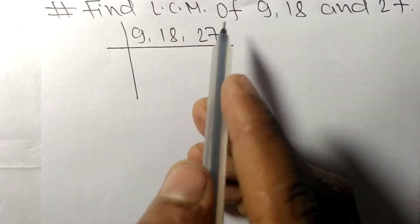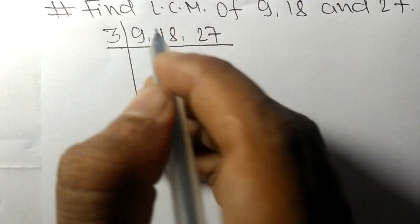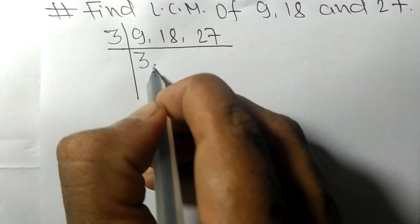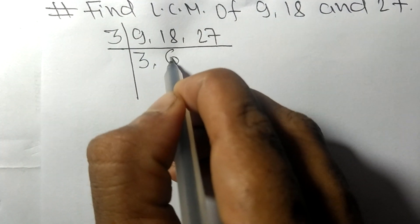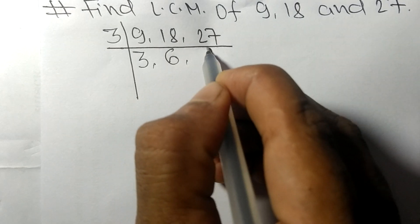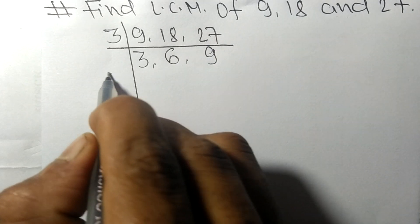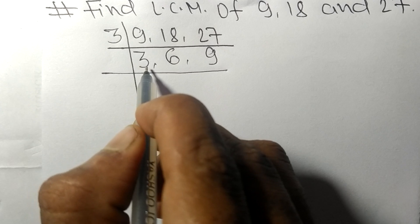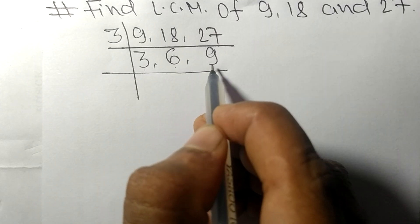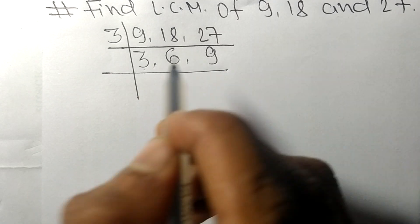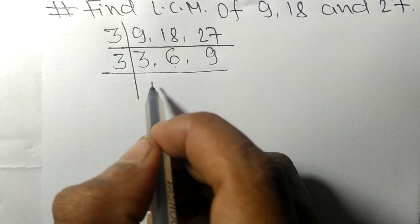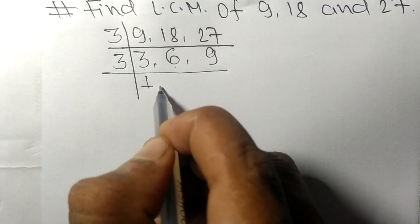These all numbers are divisible by 3. 3 times 3 means 9, 3 times 6 means 18, 3 times 9 means 27. So now again, these numbers 3, 6, and 9 are divisible by 3. 3 times 1 means 3,